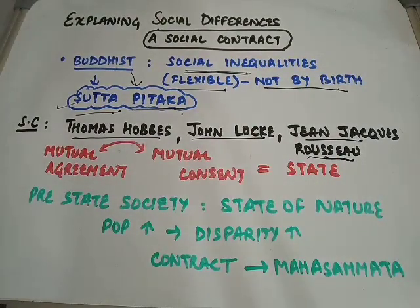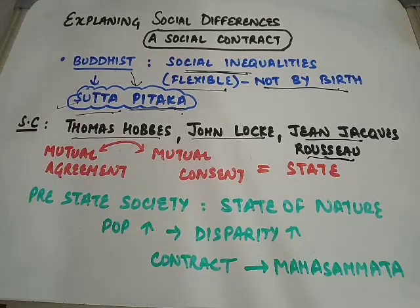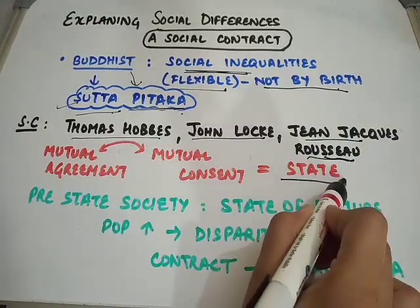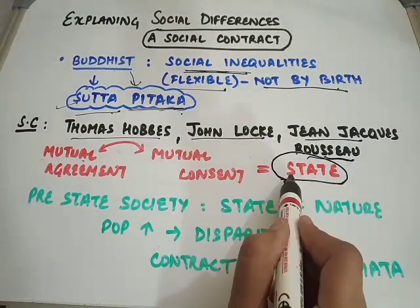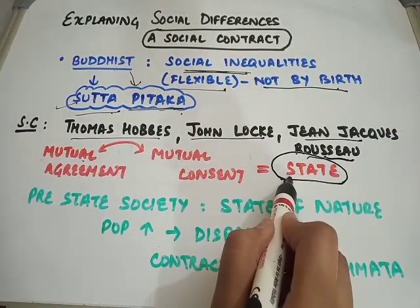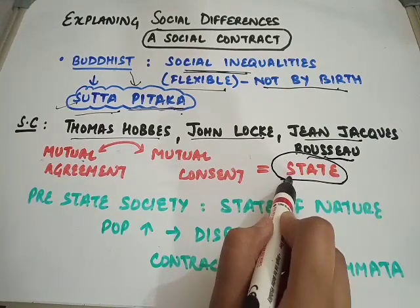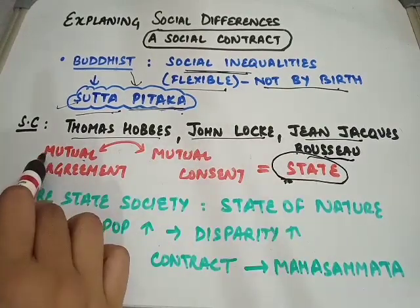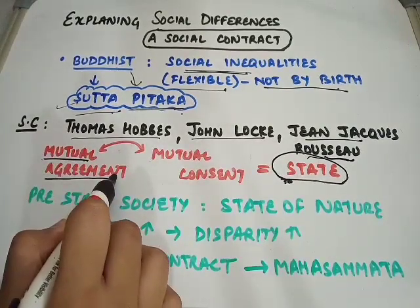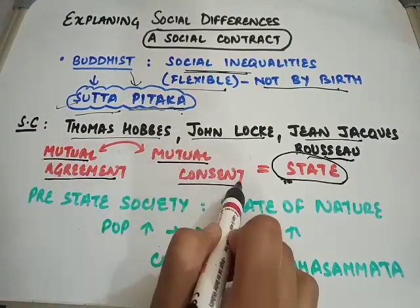Those who have legal studies as a subject must be familiar with the theory of social contract. However, for the purpose of this chapter, let us take a brief overview. The social contract theory talks about the emergence of the state — how the state came into existence. The proponents of this theory state that the state came into existence because of a mutual agreement and mutual consent of the people.